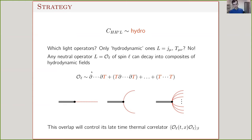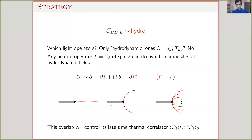A question you might have: which two-point functions are controlled by hydrodynamics — only those of conserved currents and stress tensors? The answer is no. Essentially any neutral operator — one that doesn't carry internal quantum numbers — will have the same quantum numbers as composites of stress tensors, and so it's allowed to decay into hydrodynamic excitations. The same way we wrote a constitutive relation for T^{ij} in terms of composites of densities, we can do that for any neutral operator. In the 3D Ising model, for example, any heavy operator that is Z₂-even will have its correlation function controlled by hydrodynamics.